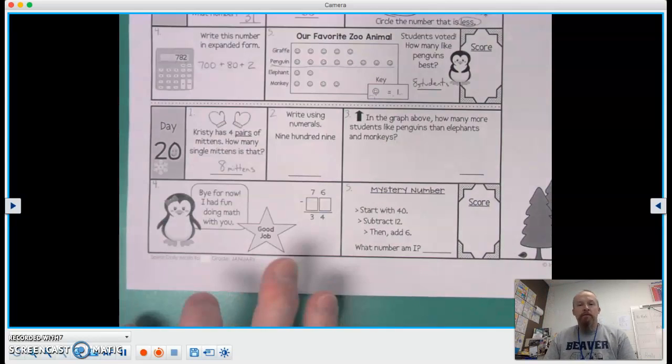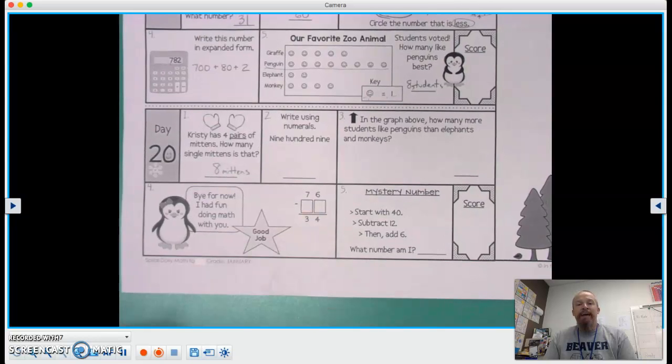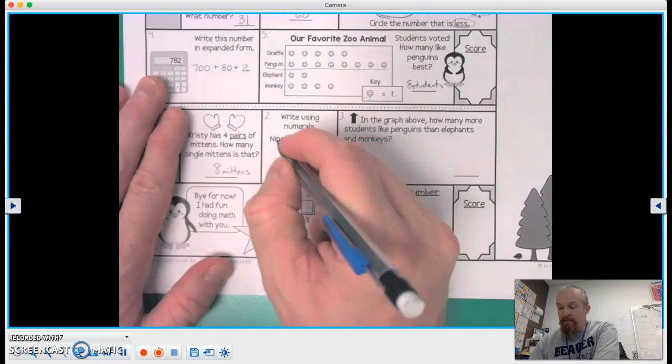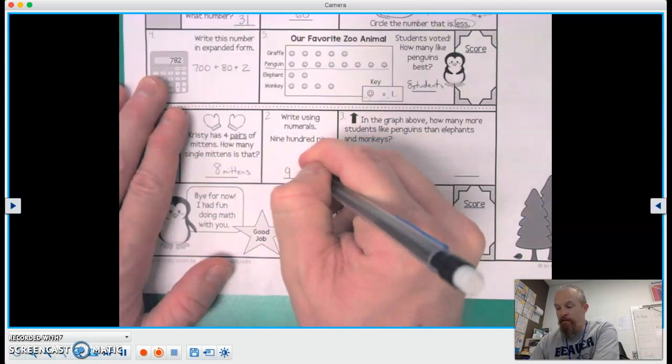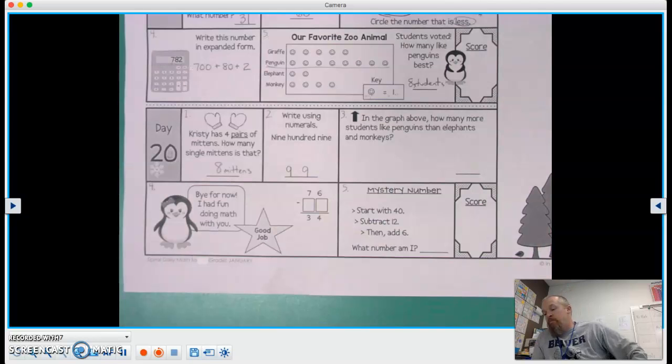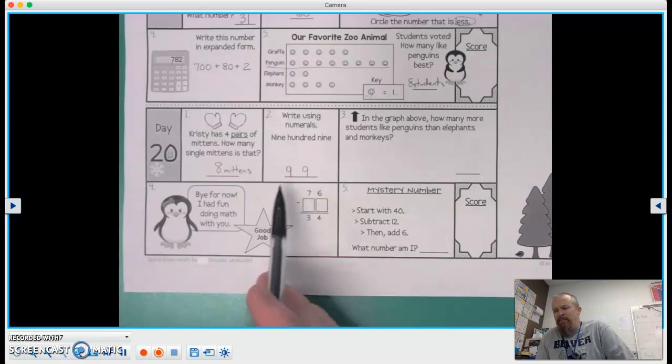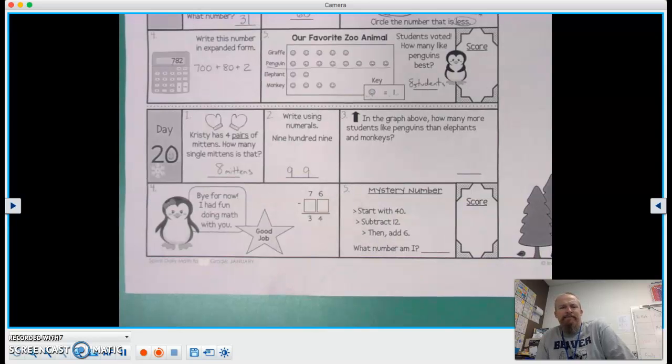All right, number two says write using numerals, 909. Well, it says 900 to start, and 909. It doesn't look right though, does it? That's not 900, that's 99. Hmm.